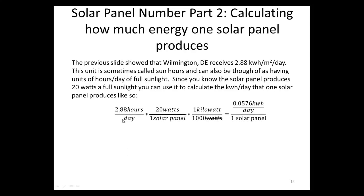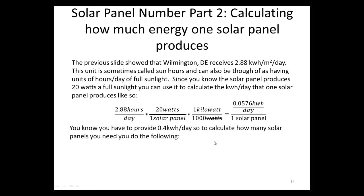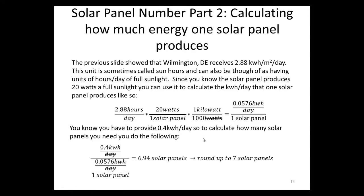Since we know the solar panel produces 20 watts at full sunlight, we can calculate the kilowatt hours per day one panel produces: 2.88 hours per day times 20 watts divided by 1,000 gives 0.0576 kilowatt hours per day per panel. We need to provide 0.4 kilowatt hours per day, so we divide 0.4 by 0.0576, giving 6.94 solar panels. Since we can't have 6.94 panels, we round up to 7 solar panels.